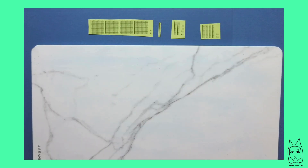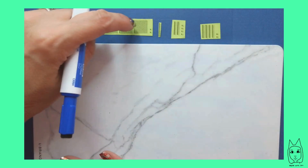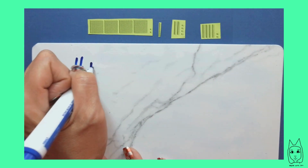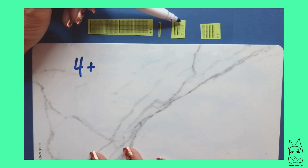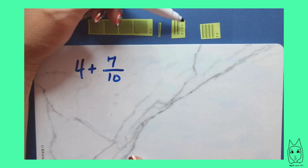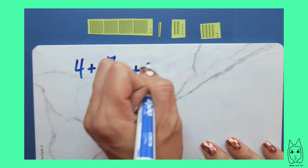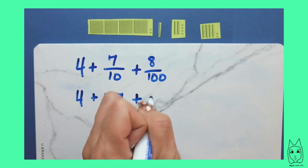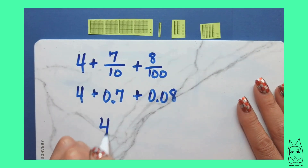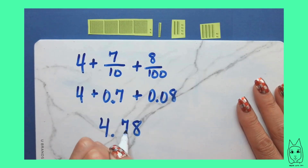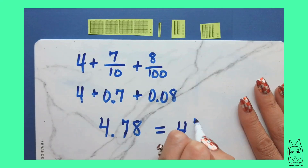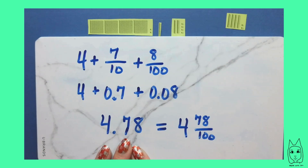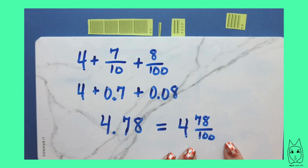We are going to do one more together. Find the sum of all these models — I encourage you to pause the video and try this yourself, then come back. We have four whole amounts, plus seven tenths, plus eight hundredths. So to add these all together, we have four and seven tenths and eight hundredths. The fraction equivalent would be four and seventy-eight hundredths. The decimal value of 4.78 is equivalent to the fraction value four and seventy-eight hundredths.